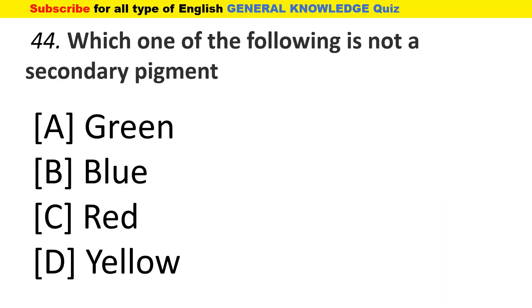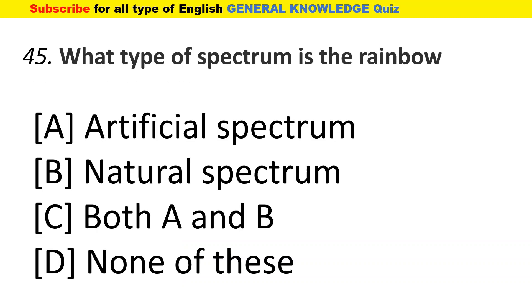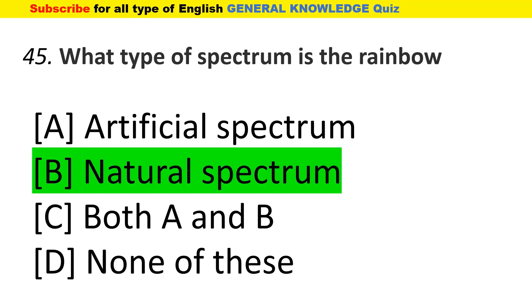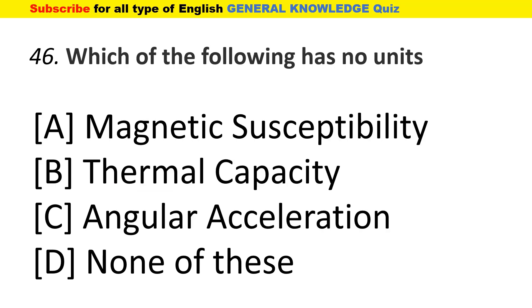Which one of the following is not a secondary pigment? The answer is yellow. What type of spectrum is the rainbow? The answer is natural spectrum. Which of the following has no units? The answer is magnetic susceptibility.